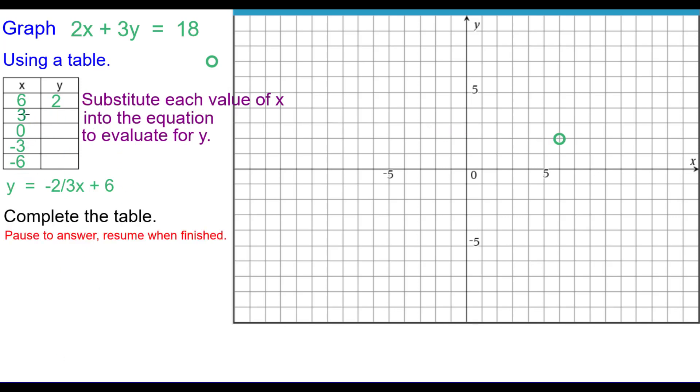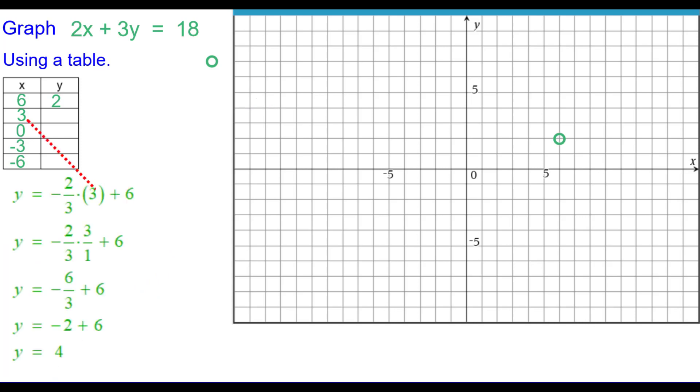We'd like you to complete the table by substituting these four values in one at a time and find the corresponding value for Y and place it into the table. Pause to answer and resume when finished. So putting in 3 for X, we came up with Y is equal to 4. Again, pause as needed. When X is 0, we found Y is 6. So we plotted 0, 6. And again, if you need to pause that, do so.